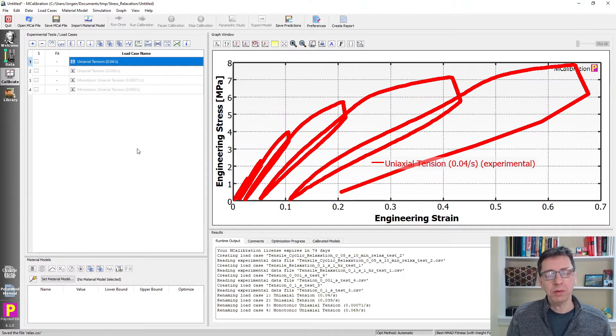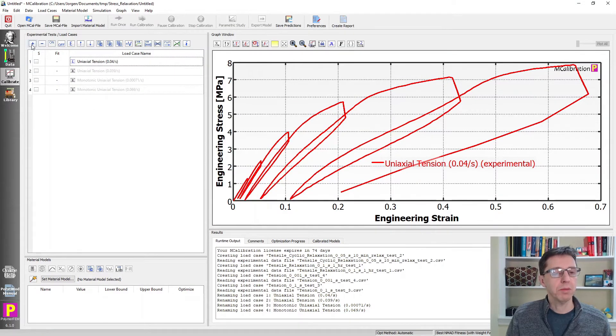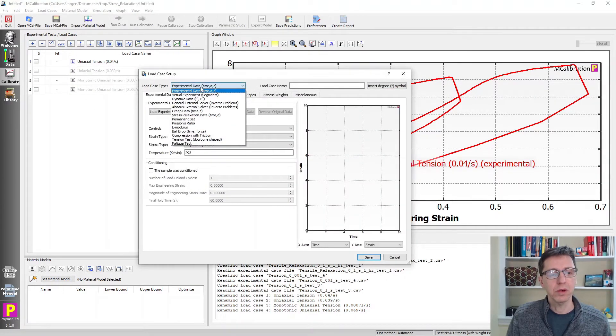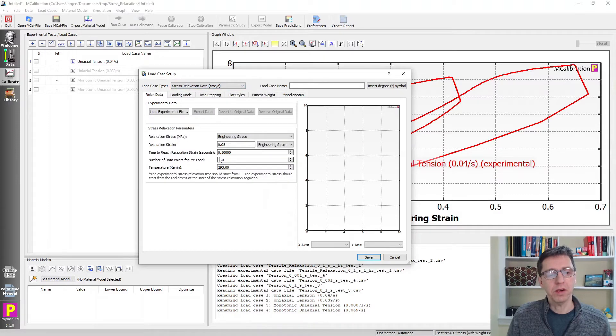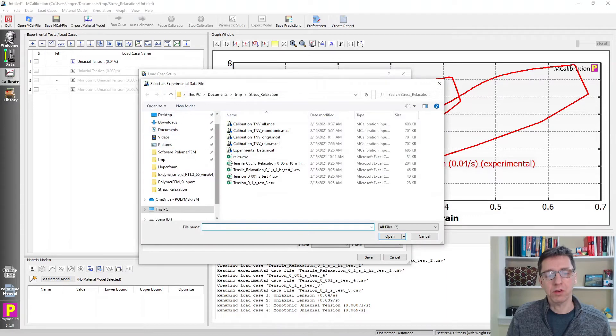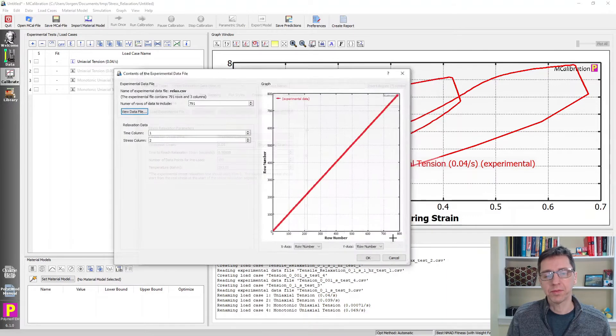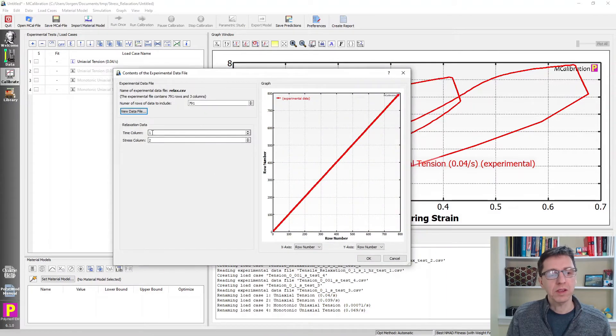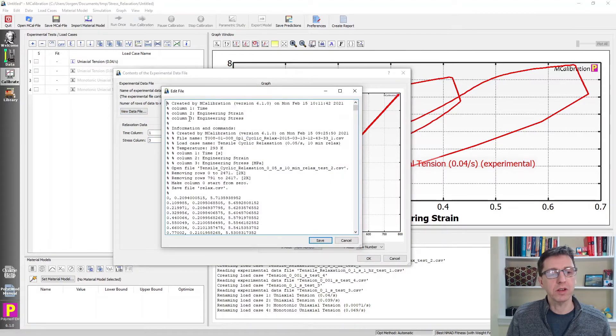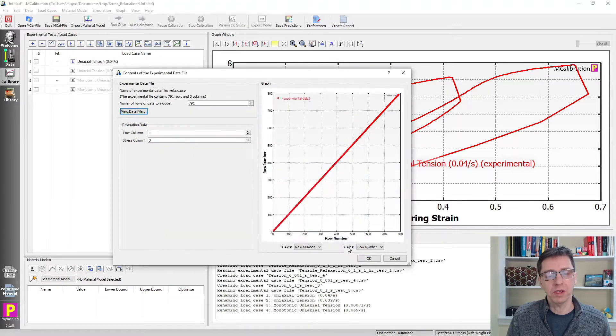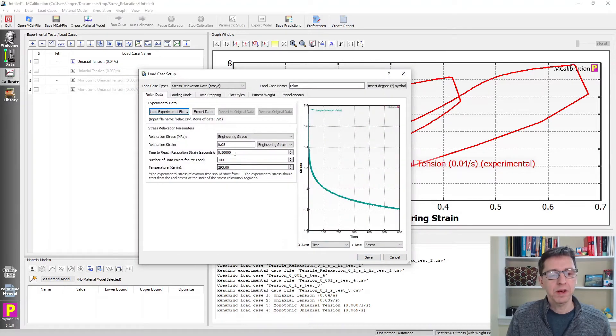If I want to use this in MCalibration, I can now click on the plus sign and go to stress relaxation data, which requires you to specify a file. This is the file we just created, relax. Time column was one, and stress column is going to be three in this case. You can click on view data file to verify.